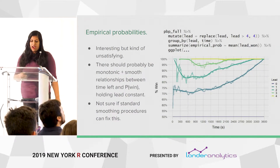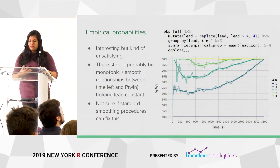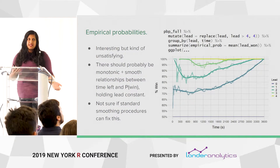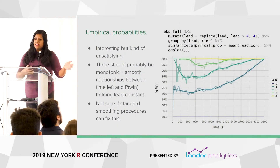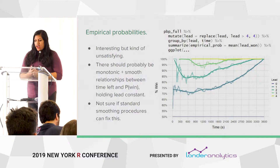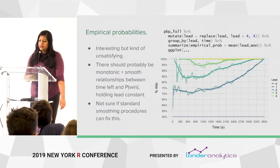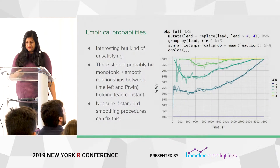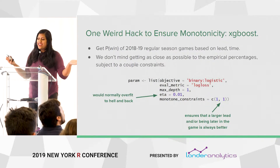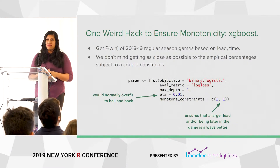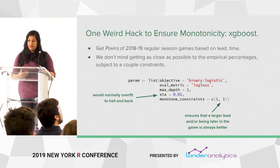I found this a little unsatisfying because I think there should be monotonic and fairly smooth relationships between the time left in the game and the probability of winning given that you have a lead. It feels better to be up one goal with 20 minutes left than 25 minutes, because your opponent has less time to make up that lead. I fit a GAM smooth through those empirical probabilities but that doesn't really fix the problem. So I have one weird hack to ensure monotonicity: XGBoost has really easy-to-implement monotone constraints that can fix that problem.